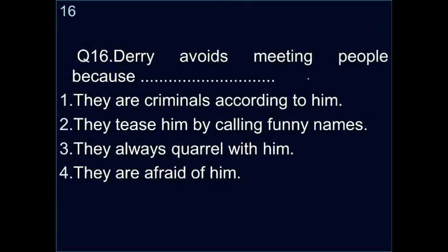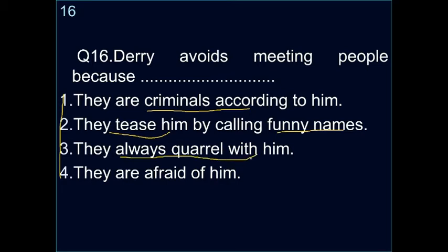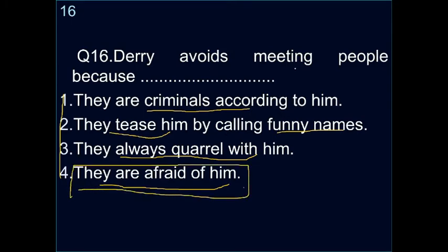Question sixteen: why does Derry avoid meeting people? Options are: they are criminals according to him, they tease him by calling funny names, they always quarrel with him, or they are afraid of him. Derry has an inferiority complex — he thinks people are scared when they see his face. The correct answer is the fourth option — they are afraid of him.